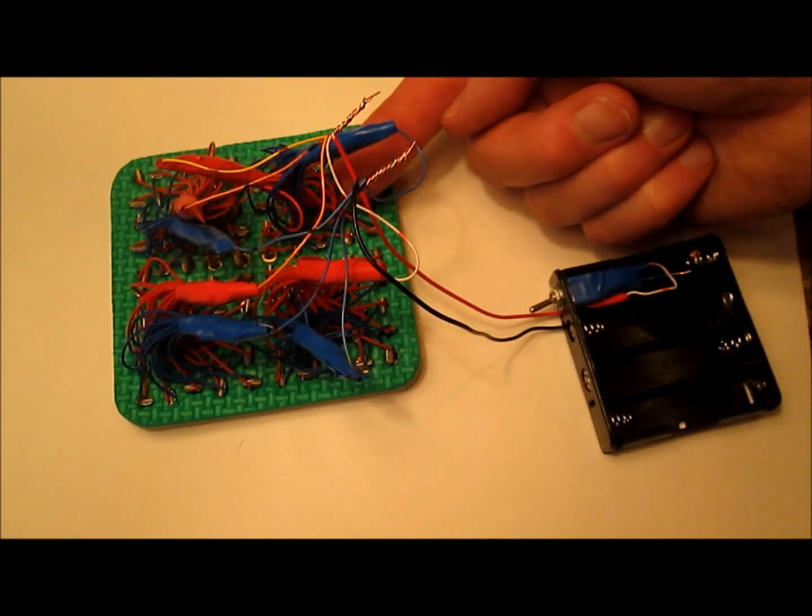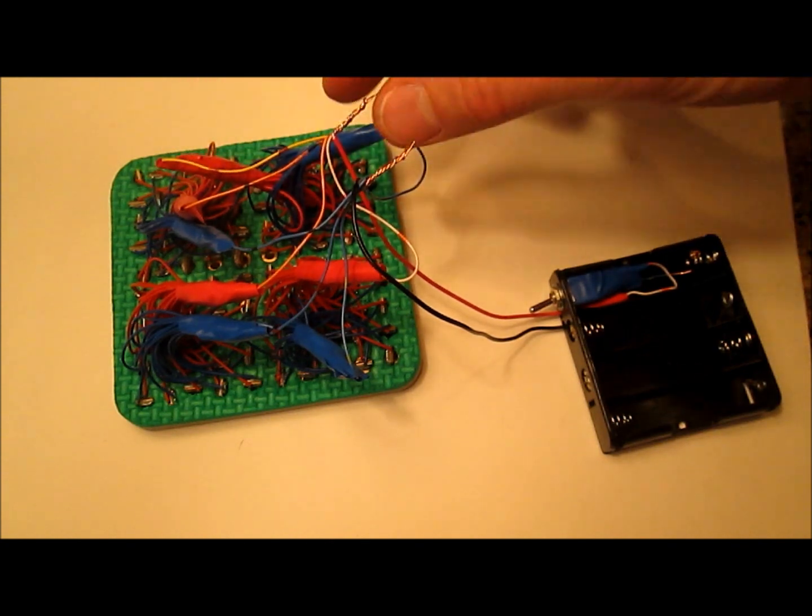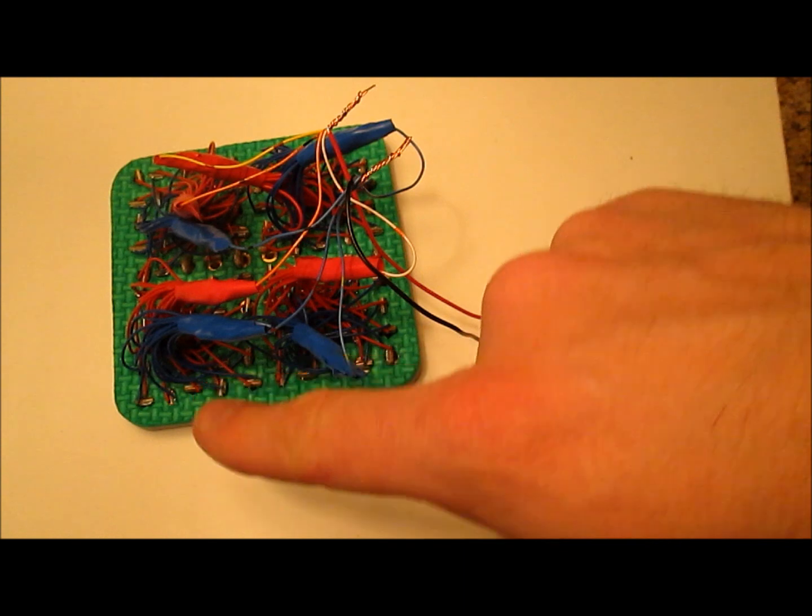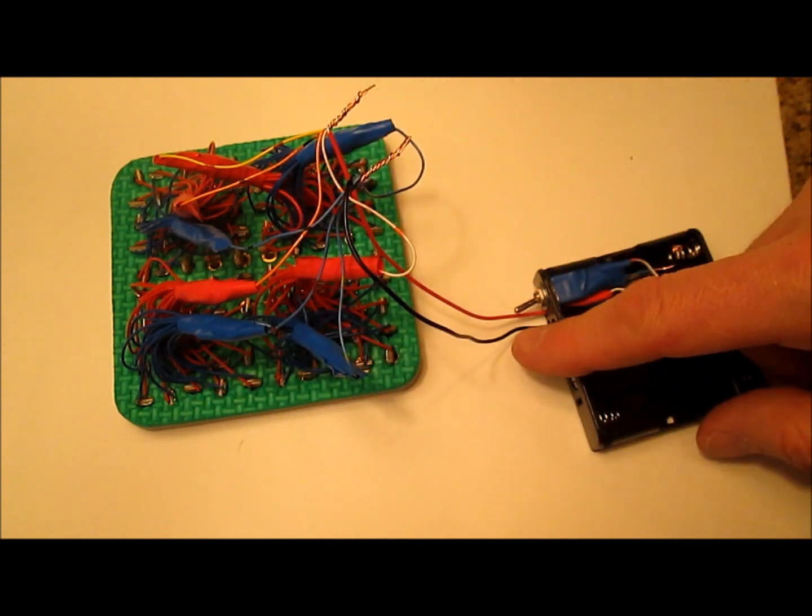We're simply connecting all the red wires and their pigtails to the red wire on the battery pack and all the blue wires go to the black wire on the battery pack.